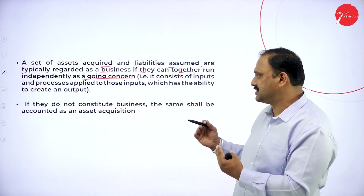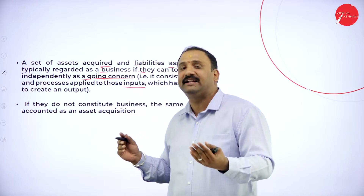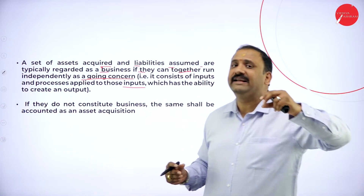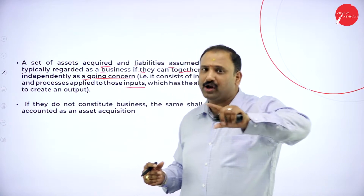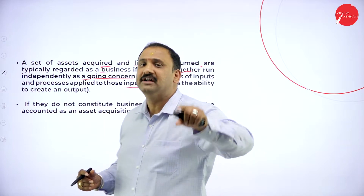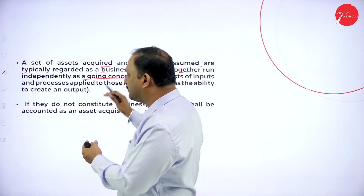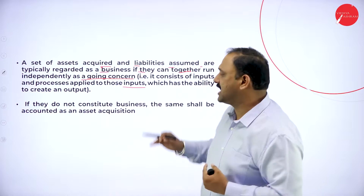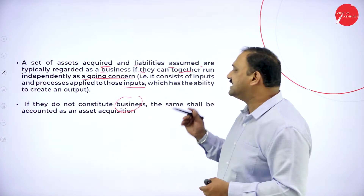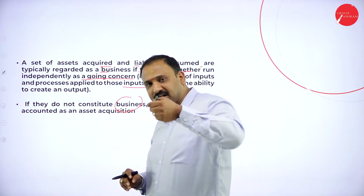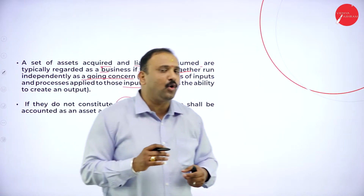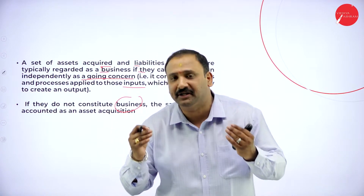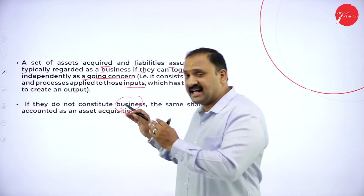A business consists of inputs and processes applied to those inputs which have the ability to create an output. These things have to be translated in terms of the accounting standards, which is where Indian Accounting Standard 103 comes in. If they do not constitute a business, the same shall be considered as asset acquisition — meaning if it is not run like a company but acquired like any other property, it would be treated as an asset acquisition.